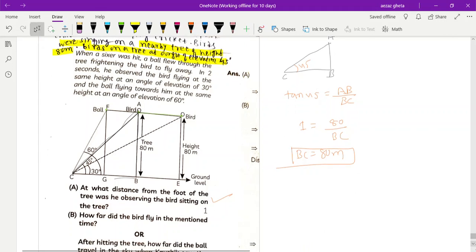Second question: how far did the bird fly in the mentioned time? The bird is flying from A to point D in just two seconds and angle of elevation will get changed, that is becoming 30 degrees. This is DE, angle 30 degrees.